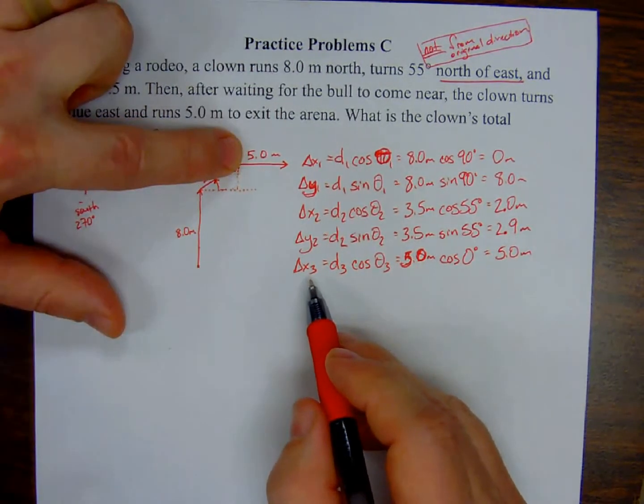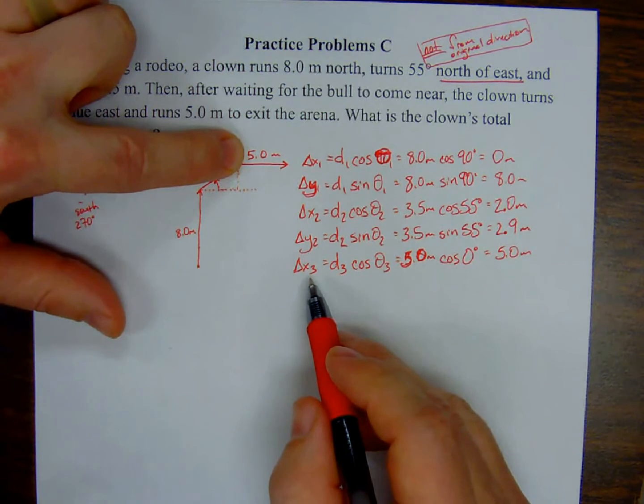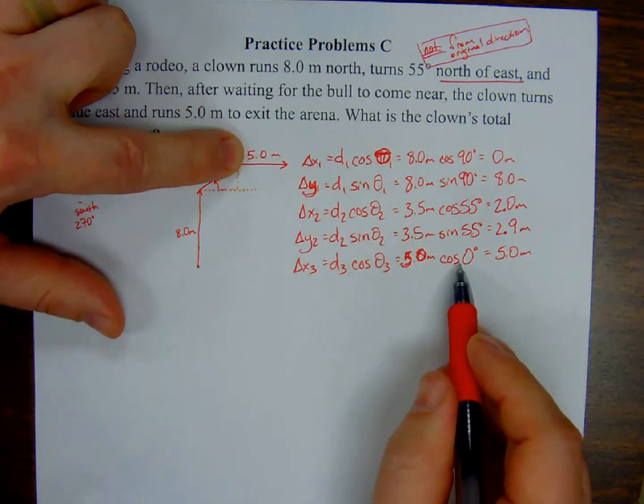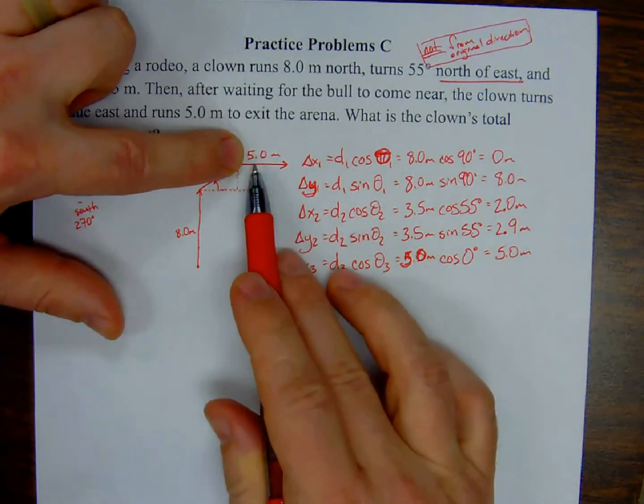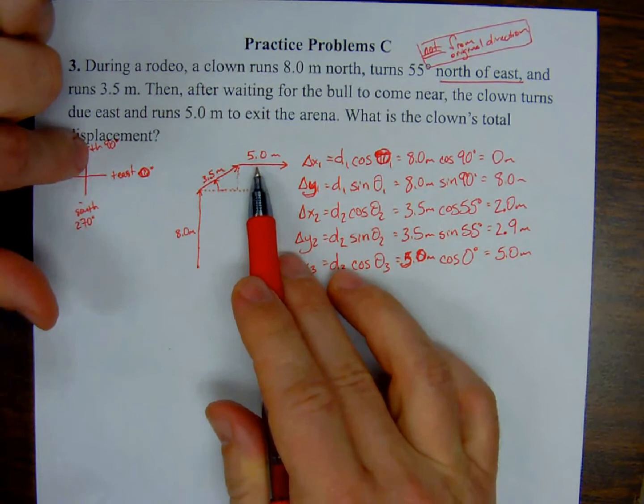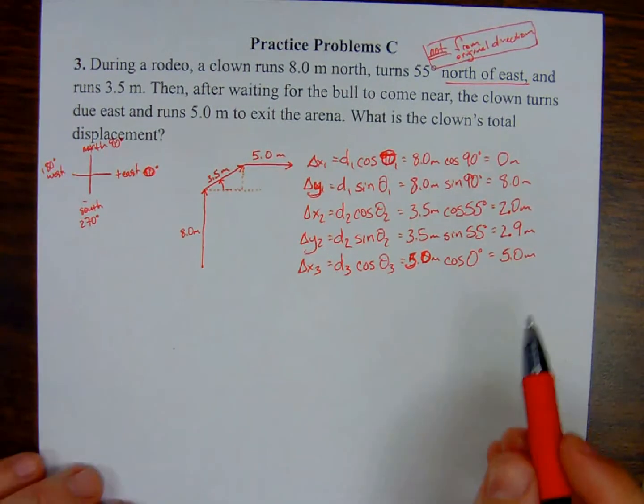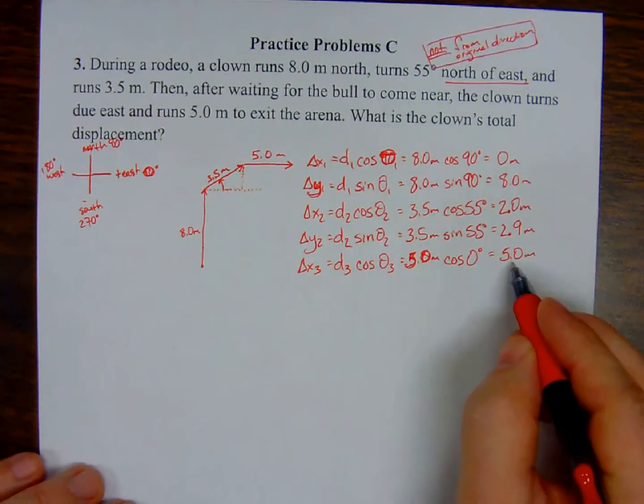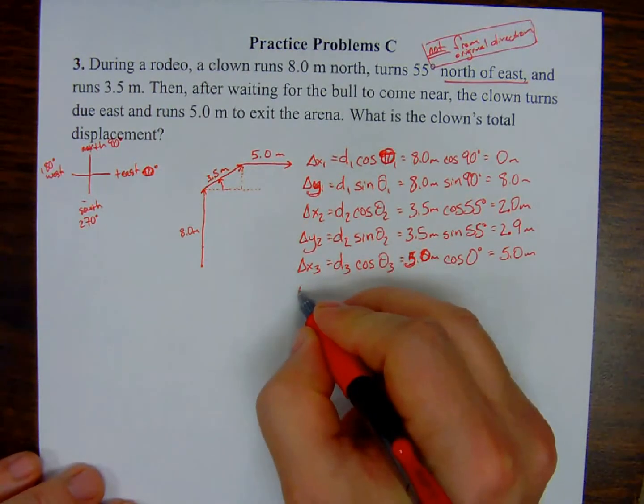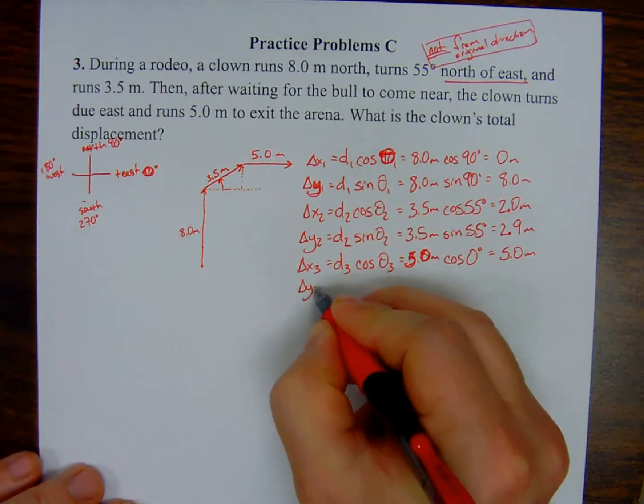And again, just as a guesstimation, when I do this third y component, there should be no y component here. It should be zero, because it didn't move north at all, just pure east. So again, third displacement, sine of the third angle, which is zero degrees. And sure enough, it comes out to be zero meters.